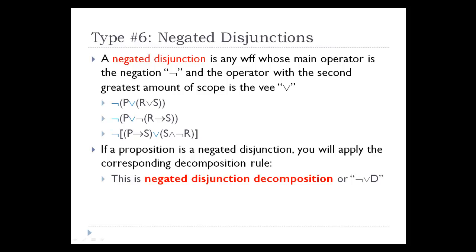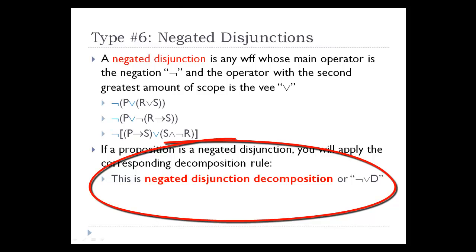Looking at negated disjunctions, there is a similar pattern. A negated disjunction is any well-formed formula whose main operator is the negation, but what differentiates negated proposition types is the operator with the second most amount of scope. A negated disjunction is identified when the operator with the second greatest scope is the V. In each example, the negation has greatest scope and the V has the next most scope. We classify these as negated disjunctions, and the corresponding rule is negated disjunction decomposition.